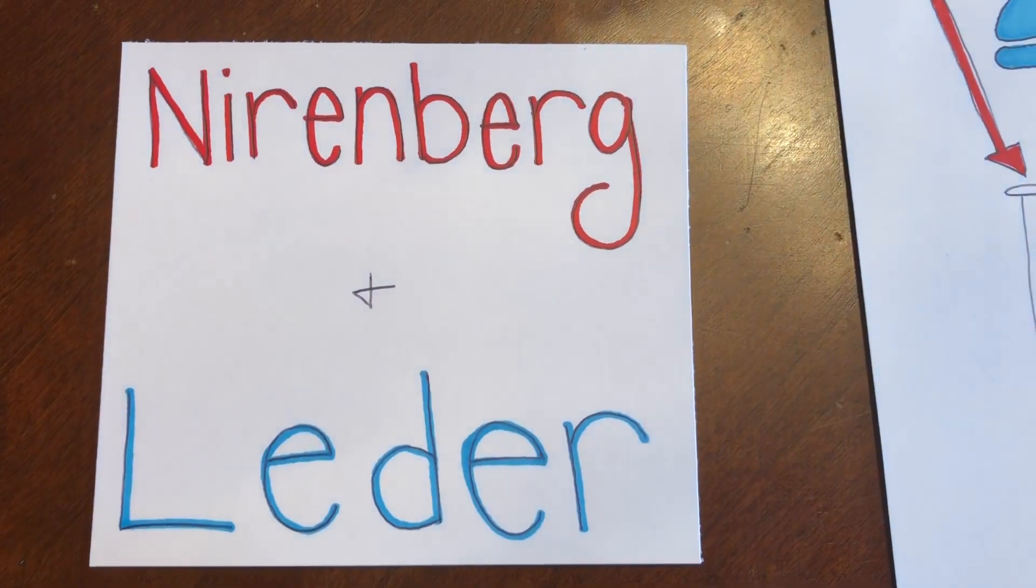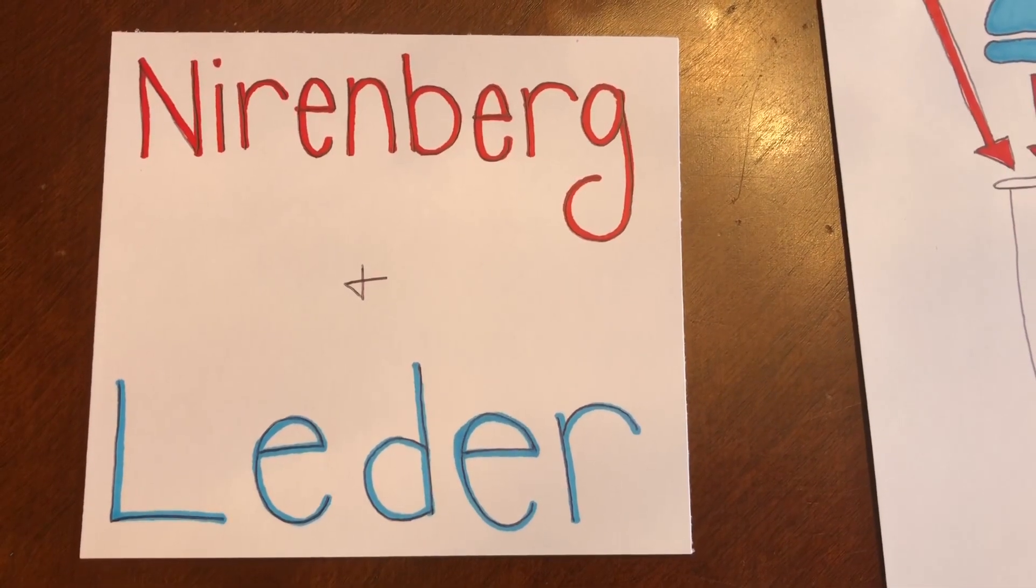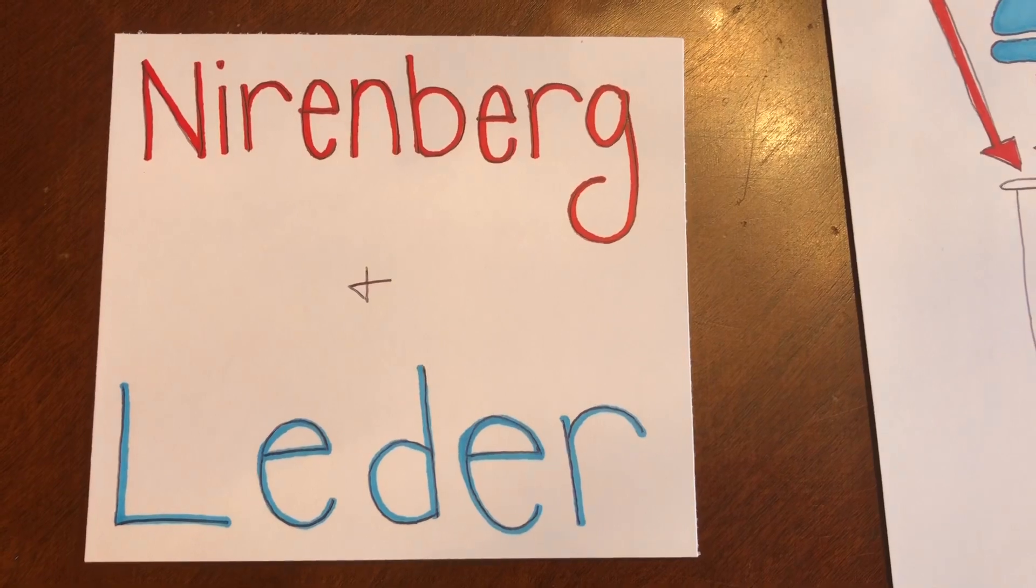We will now cover the experiment conducted by Nirenberg and Leder. Nirenberg and Philip Leder made the triplet nature of the genetic code clear and deciphered the remaining ambiguous codons in the genetic code.